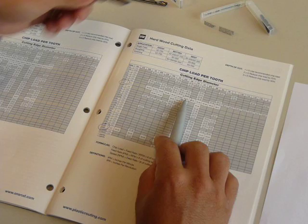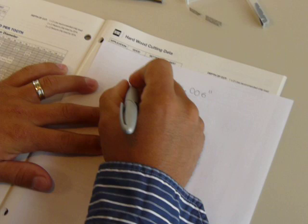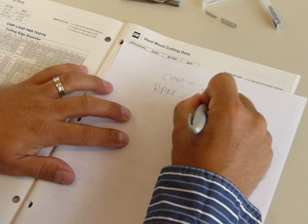If we apply the same formula again, where we know the chip load equals 6 thousandths, and once again, we will base this on the standard 18,000 RPM, and we don't know what the feed rate is. We, once again, need to figure this out.